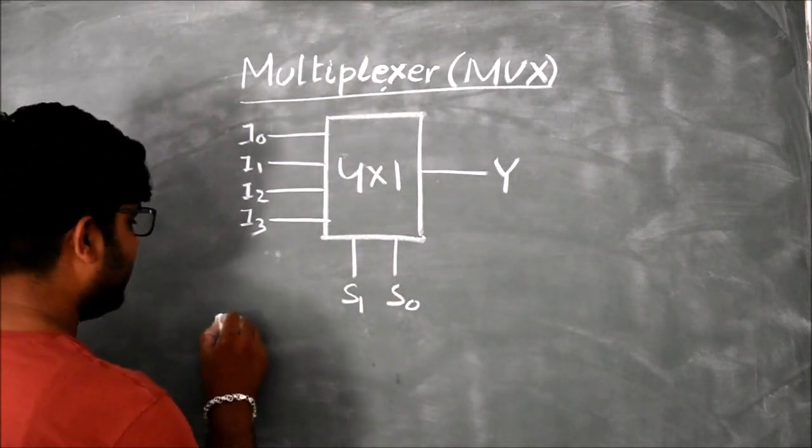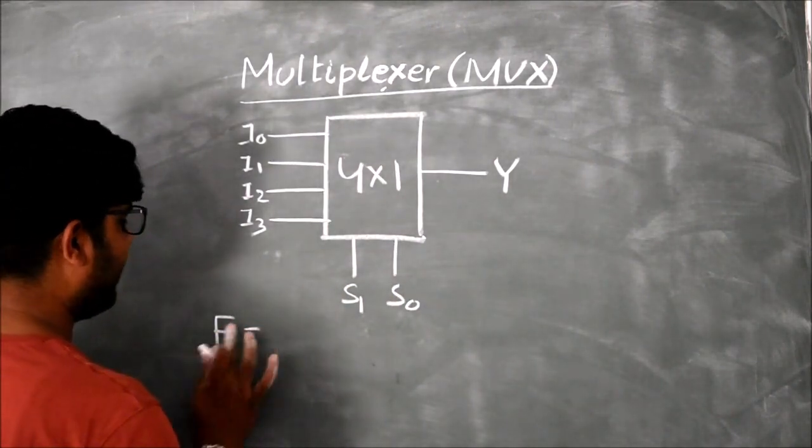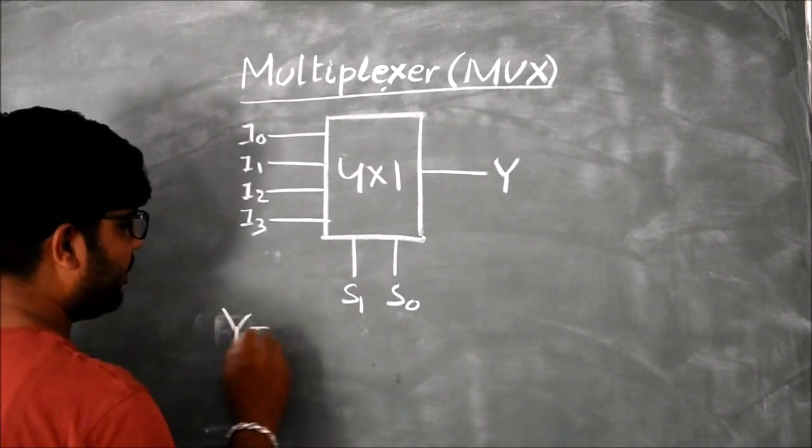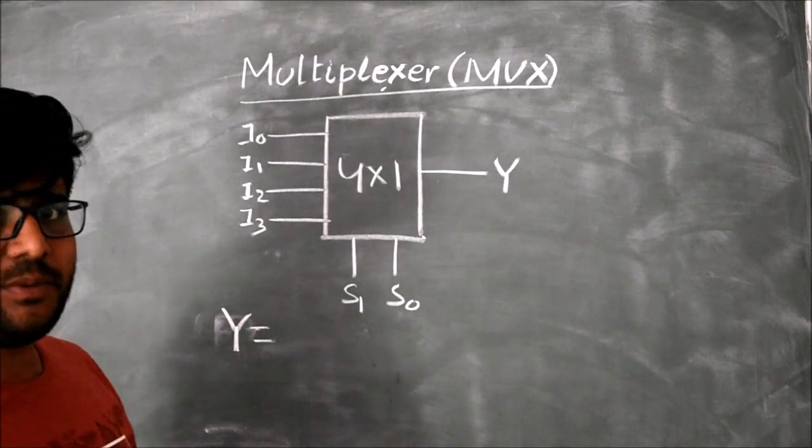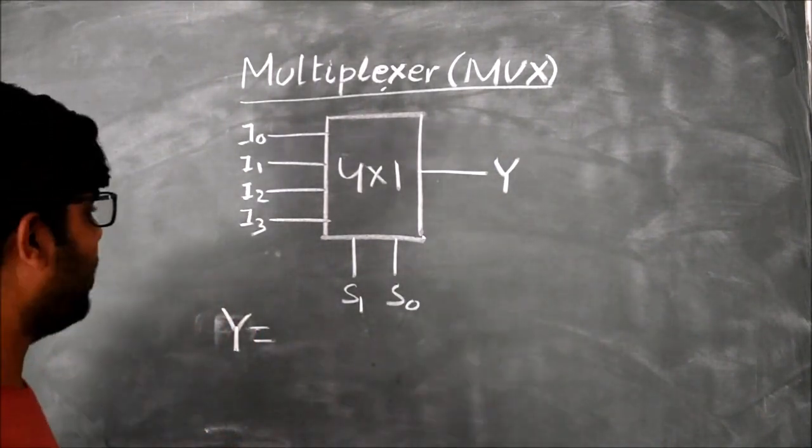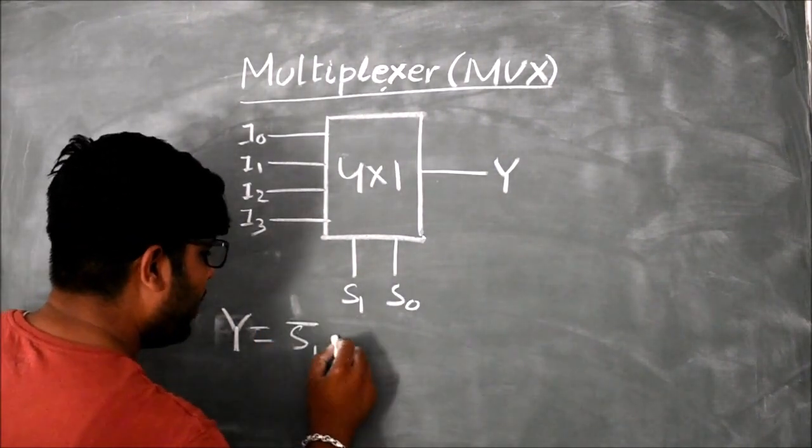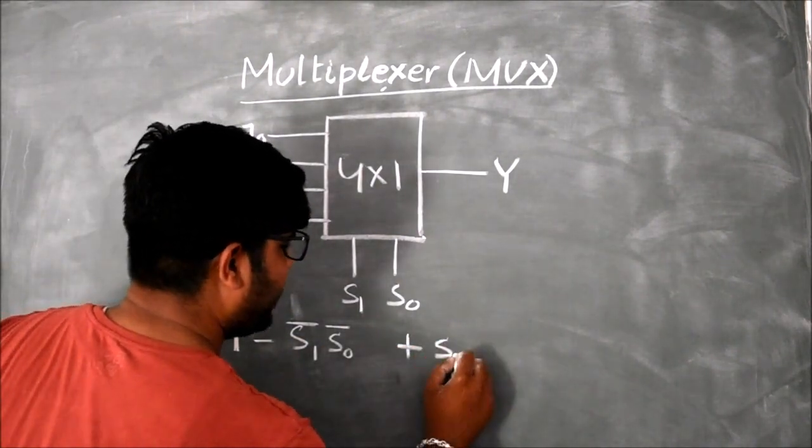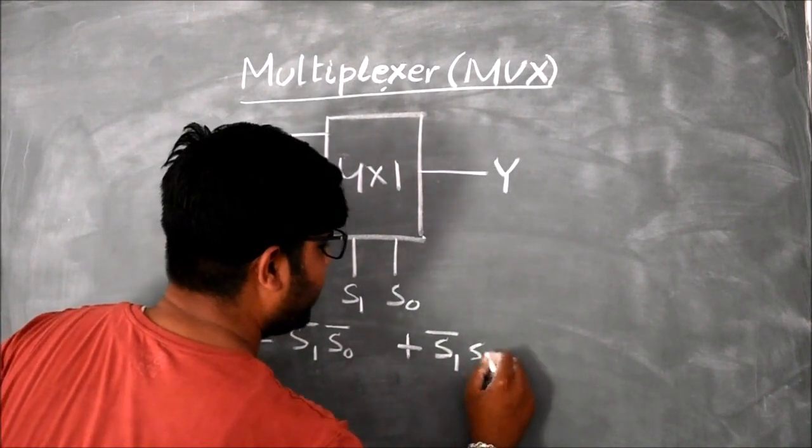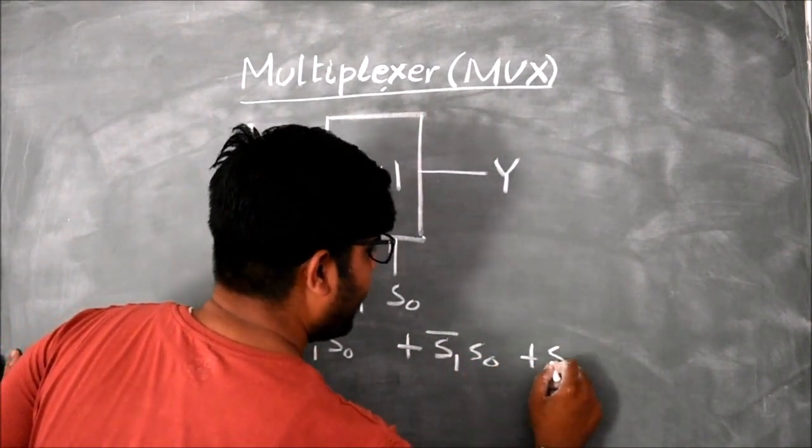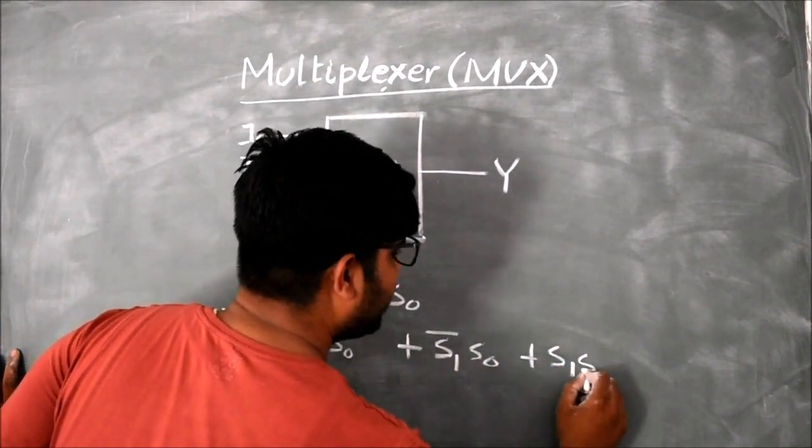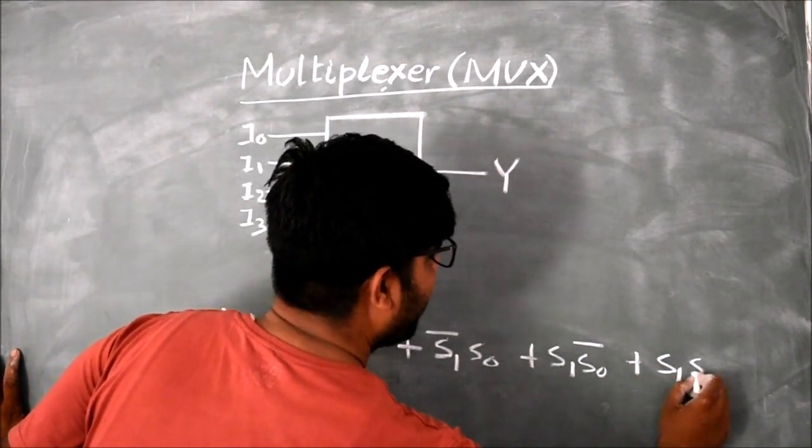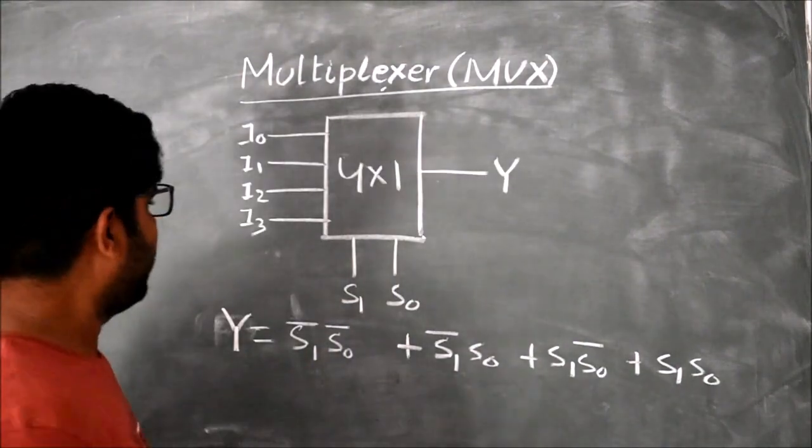The function Y is equal to, how many combinations are possible? 4 combinations. What are they? S1 bar S0 bar, plus S1 bar S0, plus S1 S0 bar, plus S1 S0.